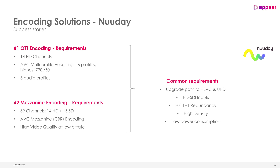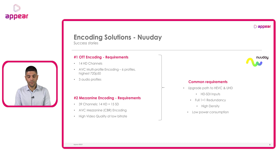For case two, mezzanine encoding, we have a higher number of channels — up to 39, with 14 HD and 15 SD — and the encoding will also be AVC, but at mezzanine or constant bitrate, one-profile encoding. In this case, the key requirement is high video quality at a low bit rate. However, we find a lot of common requirements between these two cases: the need for an upgrade path to HEVC and Ultra HD to be a future-proof solution, the need to receive content in SDI, and the need for full 1+1 redundancy self-managed in the same platform, as well as the highest density and lowest power consumption.